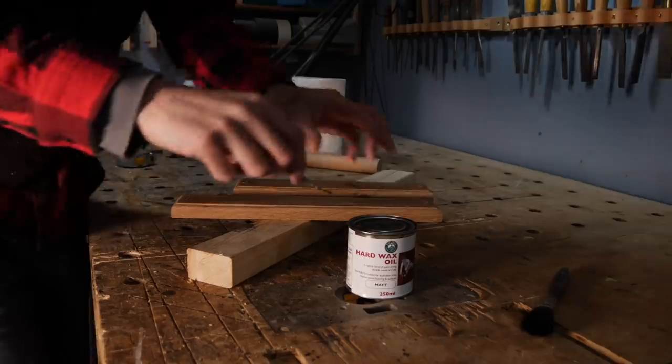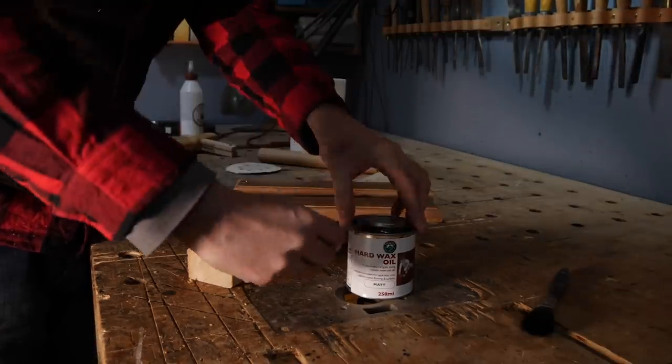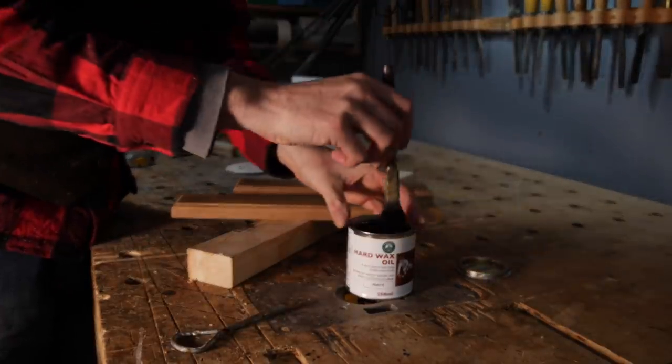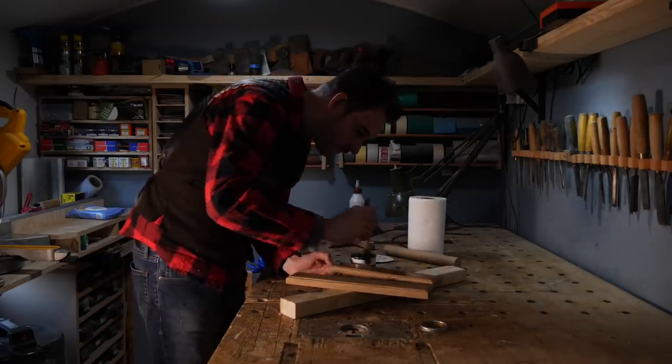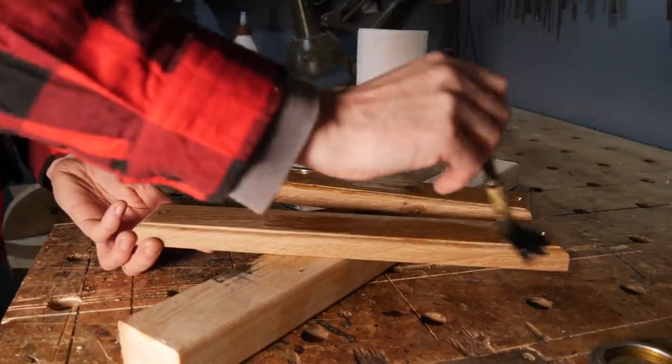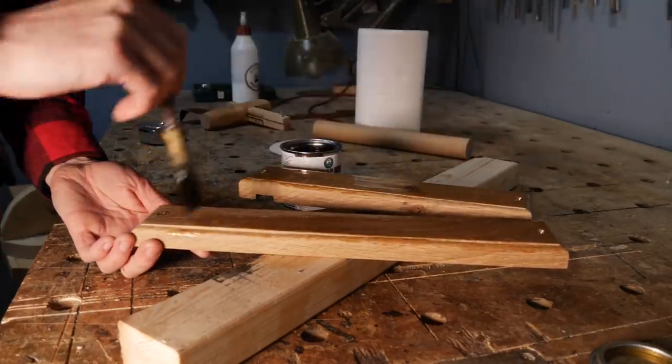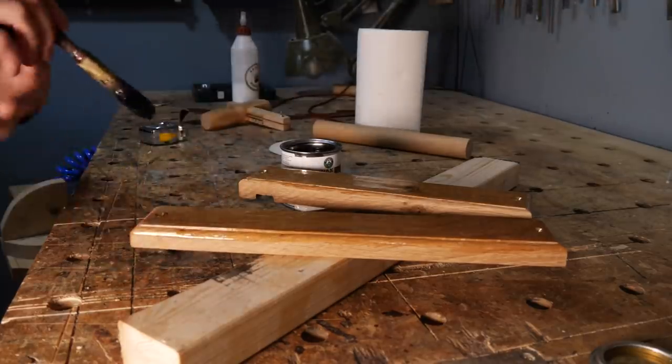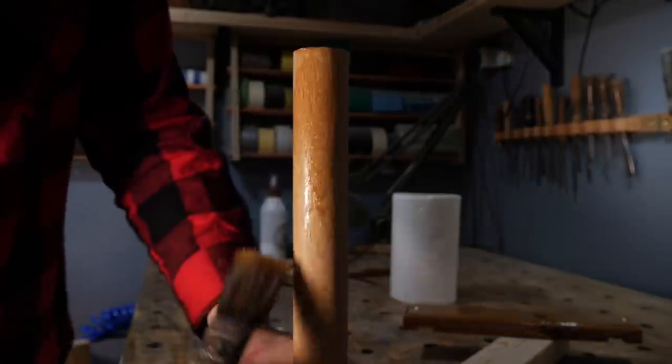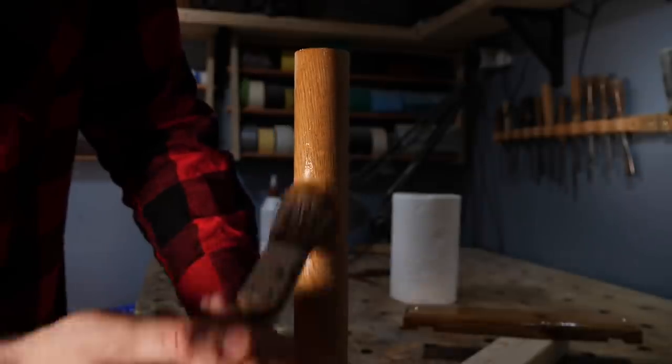Now both pieces are ready for finish. The spice rack got some Danish oil, but that knife holder is definitely going to get a bit more wear and tear, so I want something a bit more hard wearing. So I'm going to apply some hard wax oil. I'll put a link to it down below on my Amazon page under finishes. After the first coat is dried for four hours, I give it a second coat and then leave it overnight to dry.